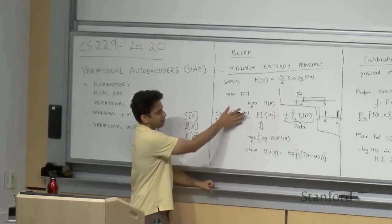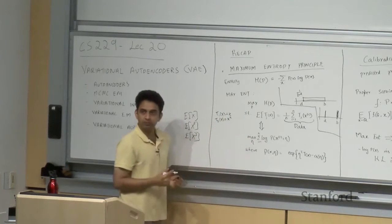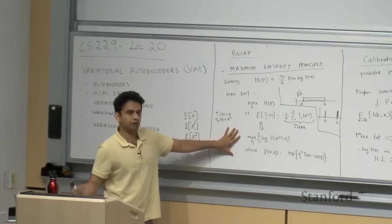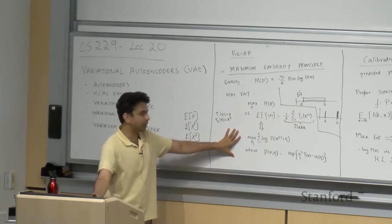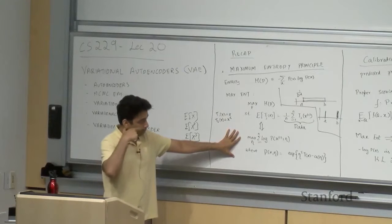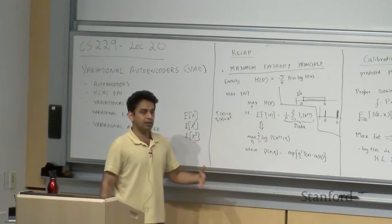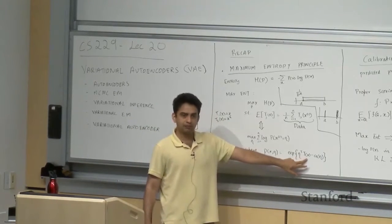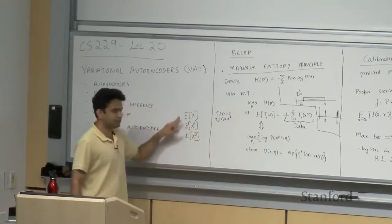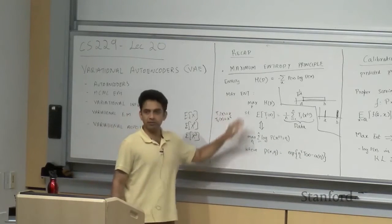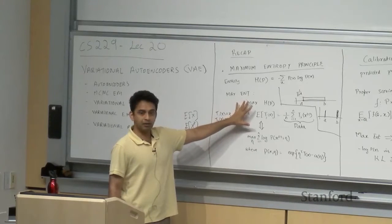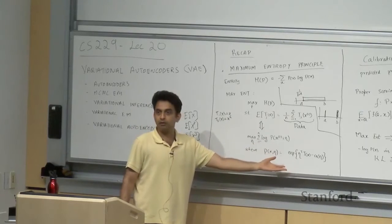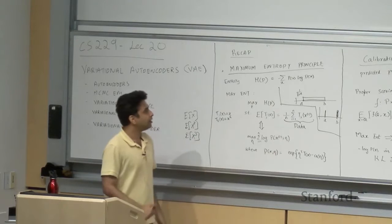The maximum entropy principle says: among all distributions satisfying the constraints, choose the one with highest entropy. This is equivalent to a dual problem of maximum likelihood, where if we assume the probability distribution is part of the exponential family whose sufficient statistics are the constraints we want to satisfy, then these two problems are equivalent. In other words, maximum entropy naturally gives rise to the exponential family of probability distributions.